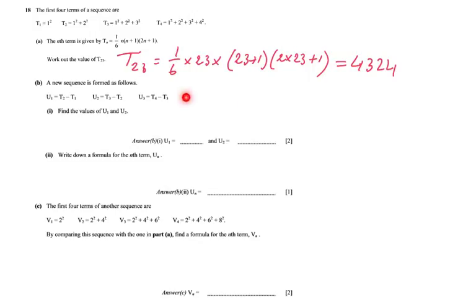Find the values of u1 and u2. Let me first work out the individual T values. T1 = 1 squared = 1. T2 = 1 + 4 = 5. T3 = 5 + 9 = 14. T4 = 14 + 16 = 30. So u1 = T2 − T1 = 5 − 1 = 4. And u2 = T3 − T2 = 14 − 5 = 9.